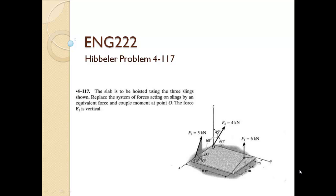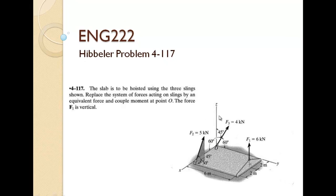This is problem 4-117 from the text by Hibbeler. What we have is a slab that is 6 meters by 4 meters, aligned in the XY plane and supported by 3 cables. We want to find the equivalent force-couple moment system acting at the origin.